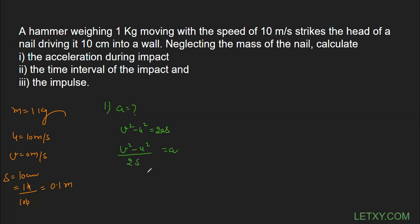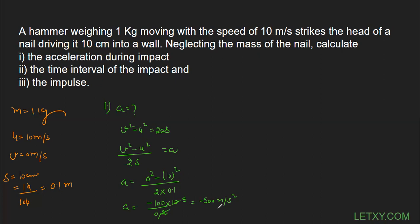Let's calculate: a = (v² − u²) / 2s = (0² − 10²) / (2 × 0.1) = −100 / 0.2 = −500 meter per second squared. It is negative because this is deceleration — after the impact the nail stops, so the body decelerates. That completes the first part.